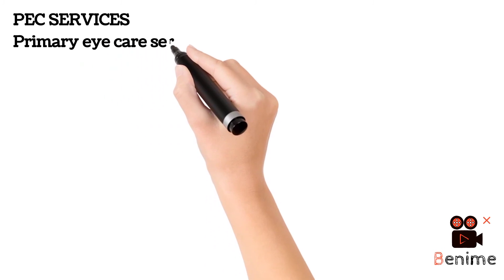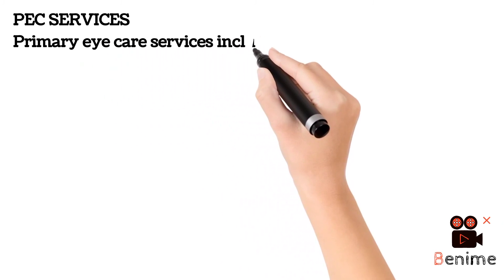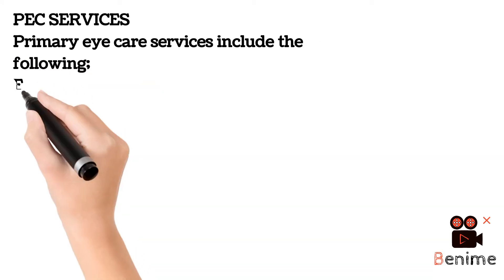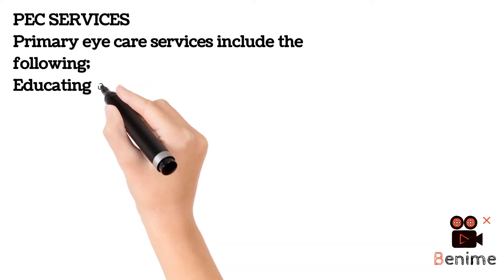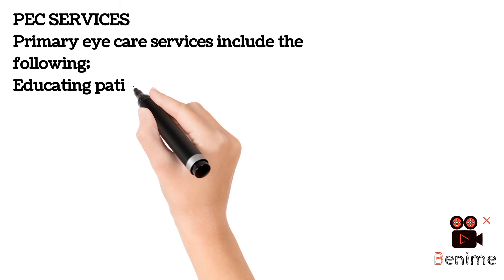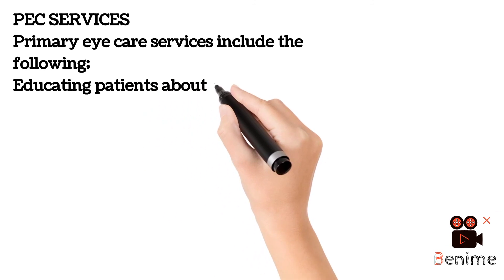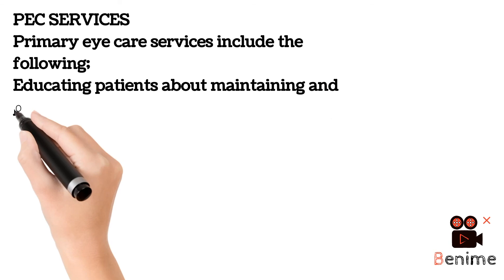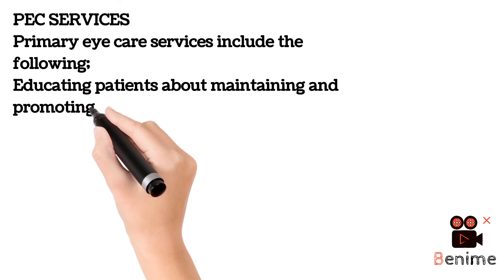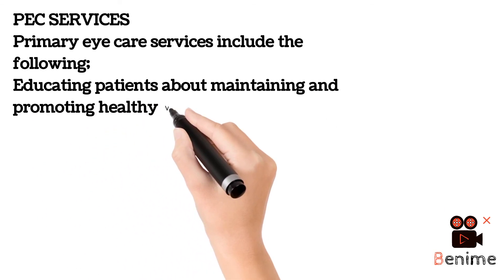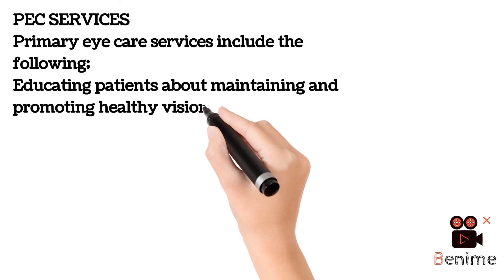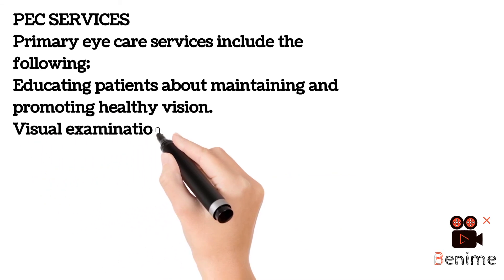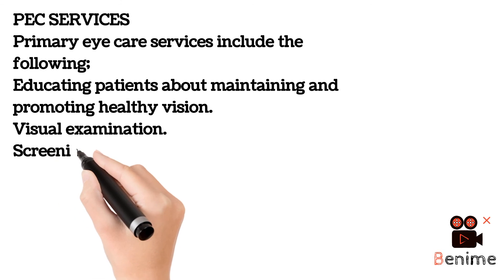What are the services provided under primary eye care? First, educating patients about maintaining and promoting vision. Secondly, performing a comprehensive examination of the visual system. Thirdly, screening for eye diseases and conditions affecting vision. Fourth, recognizing ocular manifestations of the eye.